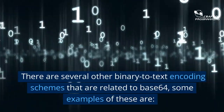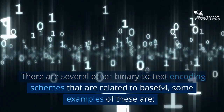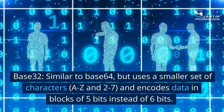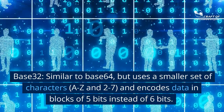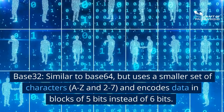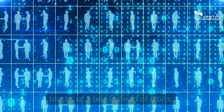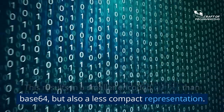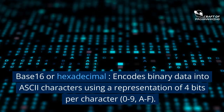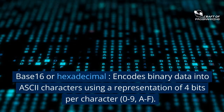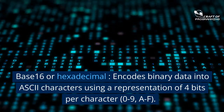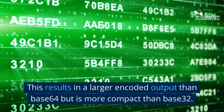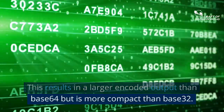There are several other binary-to-text encoding schemes related to Base64. Base32 is similar to Base64 but uses a smaller set of characters and encodes data in blocks of 5-bits instead of 6-bits, resulting in a smaller encoded output but also a less compact representation. Base16, or hexadecimal, encodes binary data into ASCII characters using a representation of 4 bits per character, resulting in a larger encoded output than Base64 but more compact than Base32.